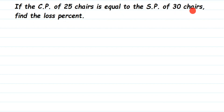To find this out, we should be comparing the same quantity — but here we have 25 chairs and 30 chairs, which are different. So we have to make sure the number of chairs is the same when comparing cost price and selling price, so we can determine profit or loss. Since no value is given, we're going to assume that the cost price of each chair is 1 rupee.